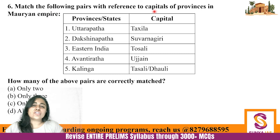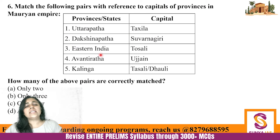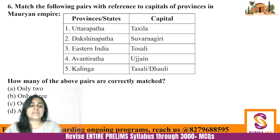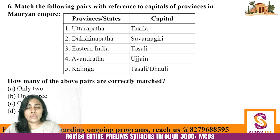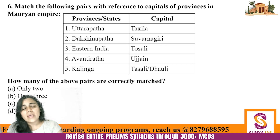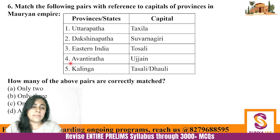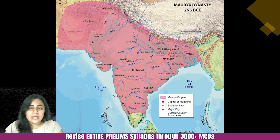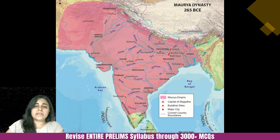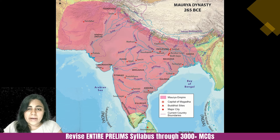Match the following pairs with reference to the capitals of provinces in the Mauryan Empire. As the Mauryan Empire grew, one capital at Pataliputra was not enough to govern such a vast territory. The Mauryas had five provincial capitals. Kalinga is one province — its capital being Dhauli.